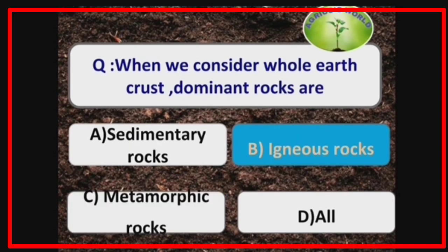Our next question: when we consider the whole earth crust, dominant rocks are igneous rocks. Igneous rocks are the dominant rocks when the whole earth crust is considered.